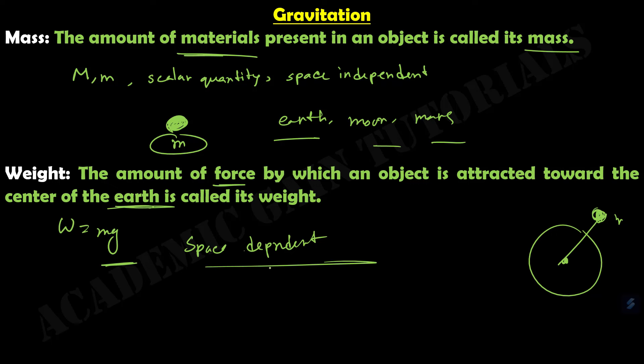Weight is space dependent means: when an object of weight W is taken on Earth, Moon, and Mars, for each case it will give a different weight. So the value of weight is different in different places. This is the main concept of mass and weight.